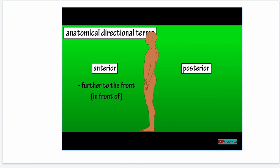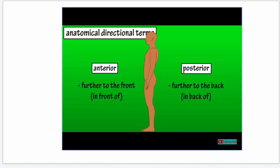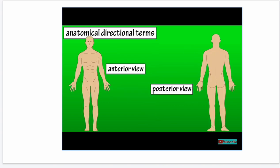Posterior means further to the back or in back of. We would say the sternum is anterior to the heart and the heart is posterior to the sternum. Sometimes the terms ventral and dorsal are used in place of anterior and posterior, where ventral means anterior and dorsal means posterior. Anterior and posterior can also describe how you're looking at the body — anterior view means looking from the front, and posterior view means looking from the back.